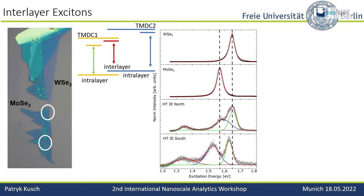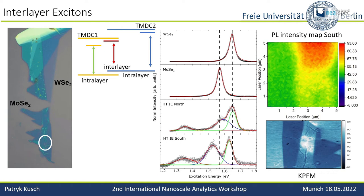We make a conventional micro-PL map and see very nicely the interlayer exciton in the upper region. We also wanted to see whether KPFM is a possibility to image such an area, because something is happening with the surface charge and the work function of the surface. We bought the KPFM option from Neaspec, and it really resolved this area — it matches exactly the same area as the PL map. We can see where the interlayer excitons live and where they don't exist.